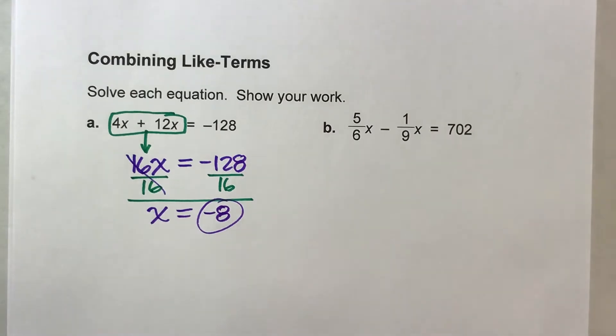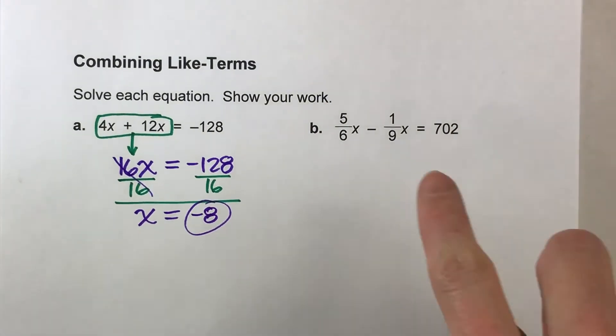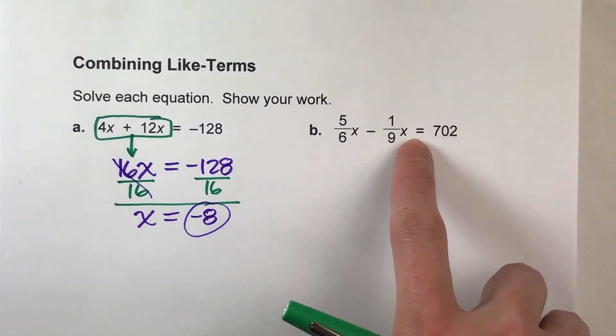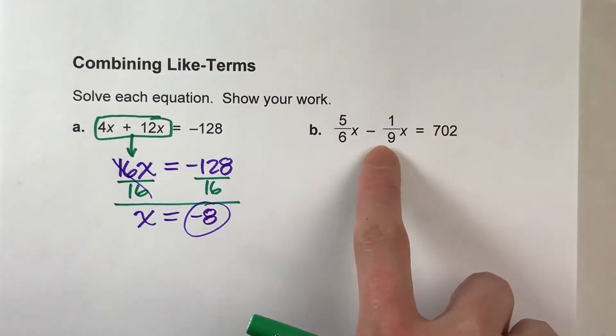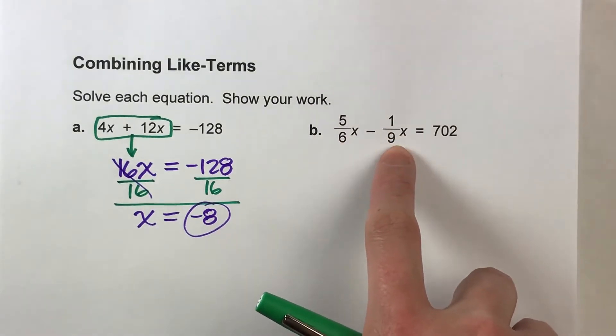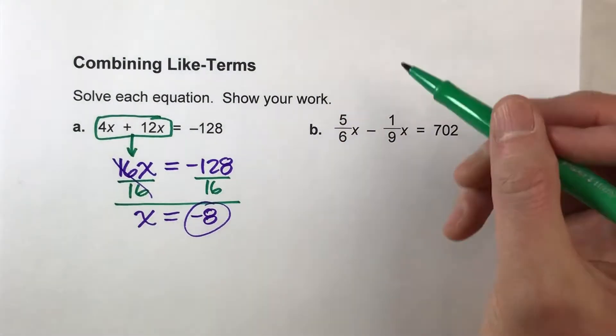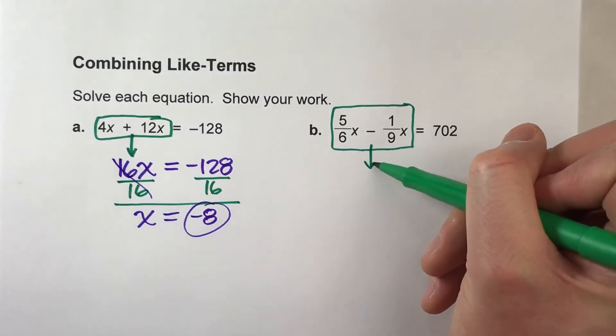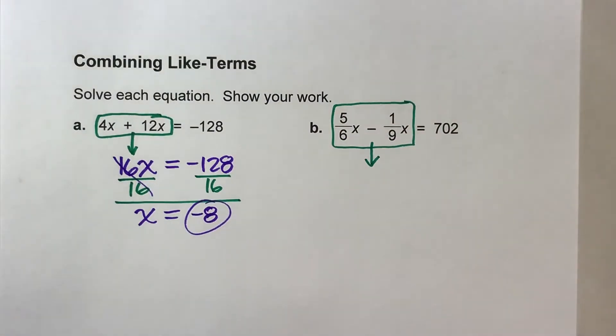Okay? So we'll do one more example, but this time when we combine our like terms on this one, we've got 5/6x minus 1/9th x equals 702. Notice our like terms this time, though, are fractions. But that doesn't change anything. Because we have two groups of x's on the same side of the equal sign, we're going to combine them together.